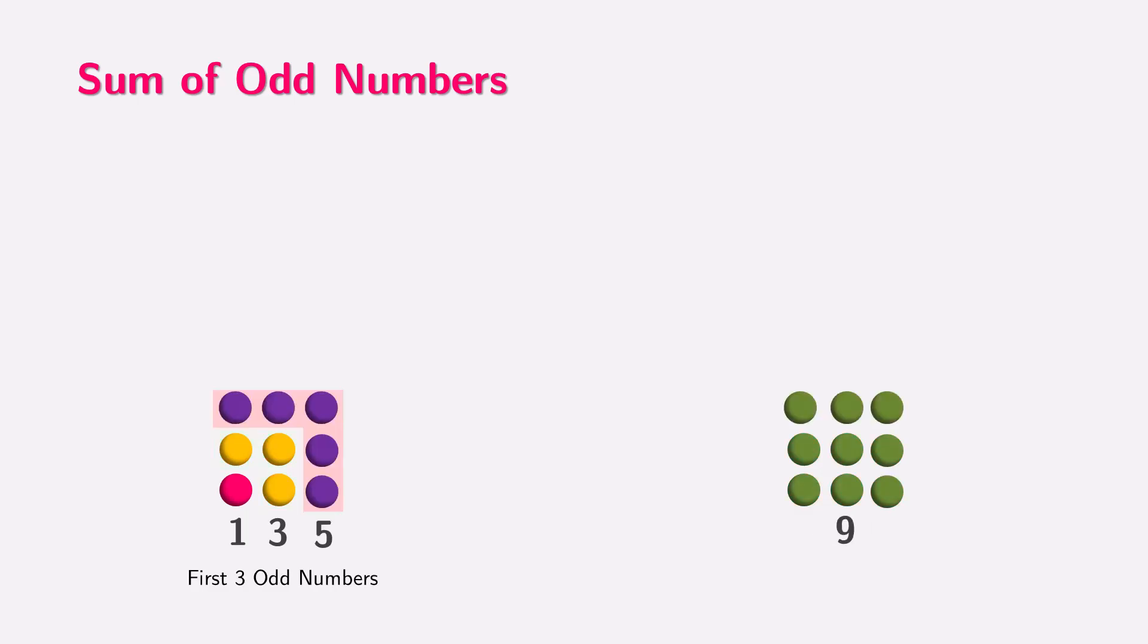Then 1 plus 3 plus 5 gives us 9, another square number. Similarly, 1 plus 3 plus 5 plus 7 gives us 16, which is another square number, and so on.